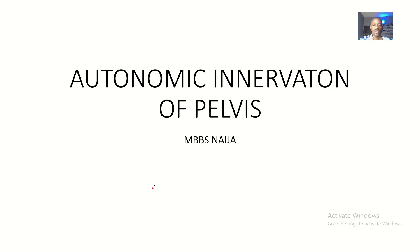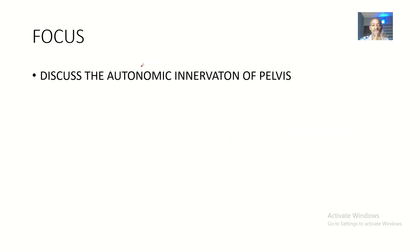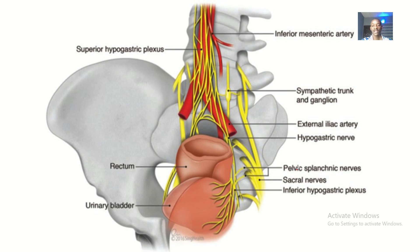Guys, BigGabs here. We'll be talking about the autonomic innervation of the pelvis. Every autonomic innervation is subdivided into the sympathetic and the parasympathetic, and today I focus to discuss the autonomic innervation of the pelvis.